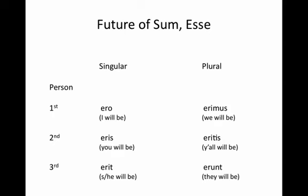Just as with the imperfect of sum, esse, you're just going to have to memorize these forms of the verb. Make flashcards, rote memorization — whatever it takes to memorize these. You have to know the forms and their meanings.